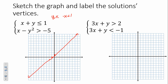Our second one is not quite quadratic — it's a square root. Half a parabola sideways. Working through: negative y squared greater than or equal to negative x minus 5; dividing by negative flips it: y squared less than positive x plus 5; taking the square root gives y less than the square root of x plus 5.